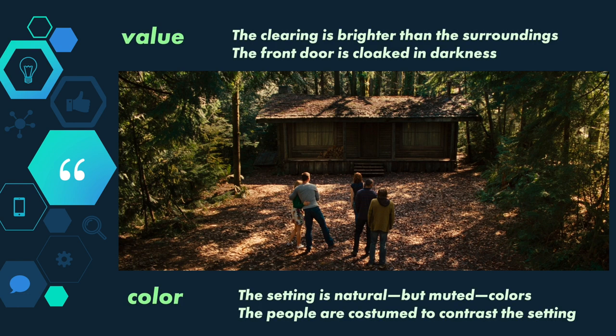Value has a lot to do with contrast and hue. In this frame, the clearing is brighter than the woods around it, so it has a lighter value. The front door, though, is almost totally cloaked in darkness, which makes us feel uncertain or nervous — we don't like to enter a space that we can't see well. Color certainly relates to value. There are no bright, poppy colors here, and the woods, the ground, and the cabin are all natural colors — greens, browns, and tans. The group is costumed in colors that aren't natural — blues, mustard yellow, tan, and white — so they stand out. You can tell that they're not part of the landscape.